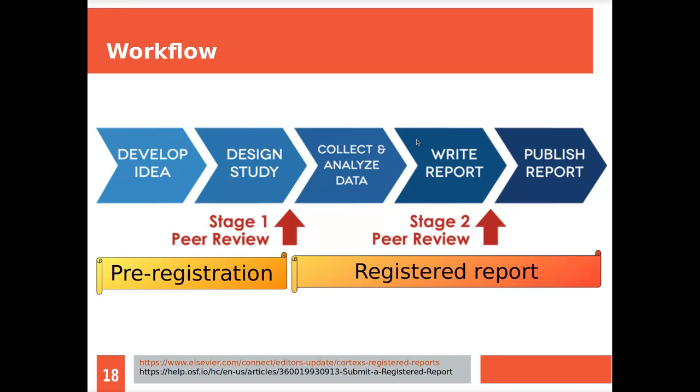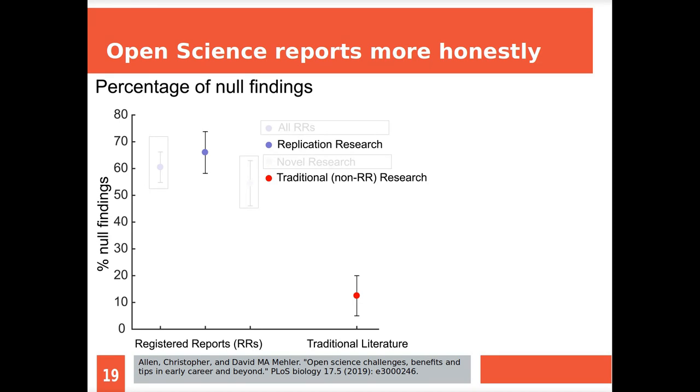The idea is you cannot bullshit anymore and you have to report more honestly. Here's a finding where they combined experiments from the traditional literature at the right and registered reports at the left. This is about replication research, trying to replicate something from the traditional literature. The height of these dots are the percentage of null findings, the percentage that they did not find something significant. In the traditional literature this is around 15 percent, whereas for registered reports it's around 65 percent. So it appears that if people report more honestly, you find fewer effects.